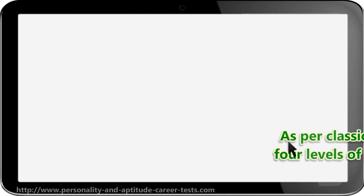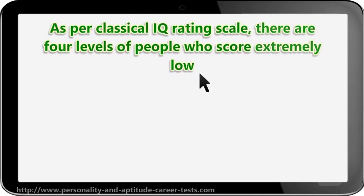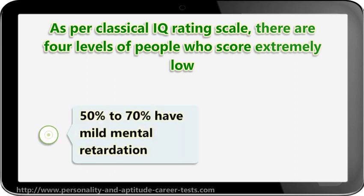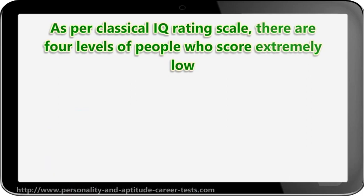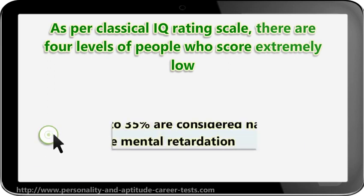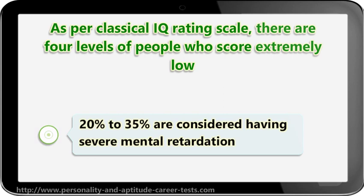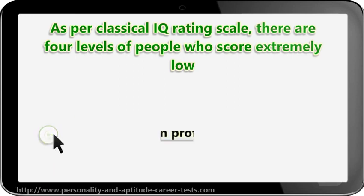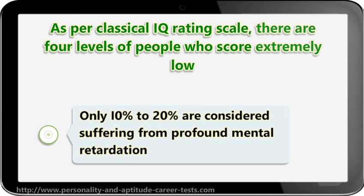As per the classical IQ Rating Scale, there are four levels of people who score extremely low. 50% to 70% have mild mental retardation. 35% to 50% are considered suffering with moderate mental retardation. 20% to 35% are considered having severe mental retardation. Only 10% to 20% are considered suffering from profound mental retardation.